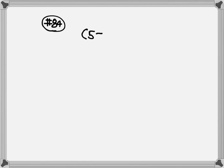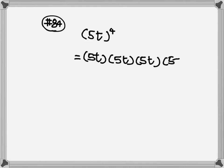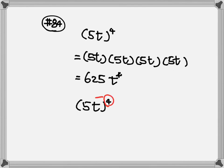Number 84. Here we have 5t to the 4. The long way: you multiply the parenthesis itself 4 times — 5t times 5t — you multiply all the 5s, that gives you 625, and t times t times t times t, adding all the exponents, gives you t to the 4th power. The easy way: take the outside exponent and give it to everybody inside. So it's 5 to the 4th power times t to the 4th power. 5 to the 4th equals 625, then t to the 4.